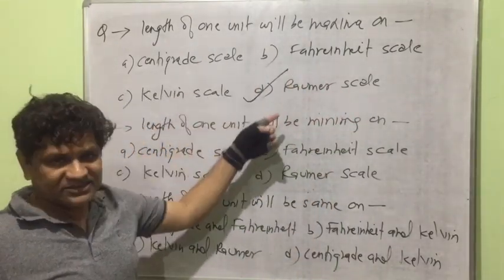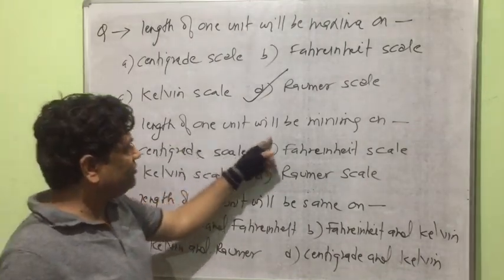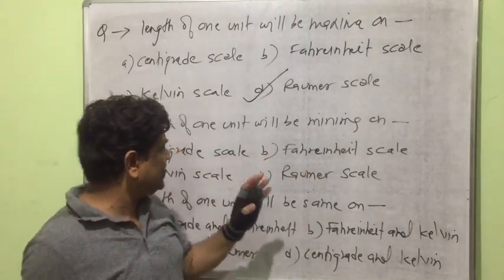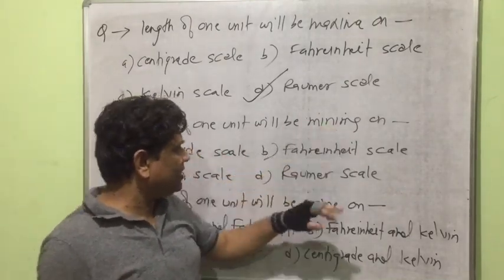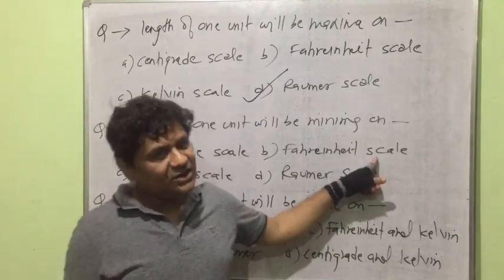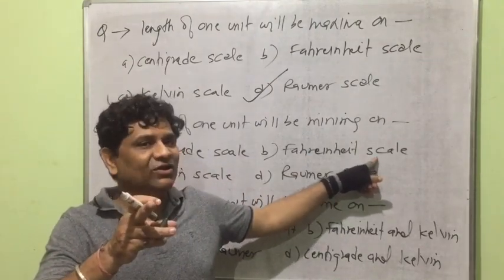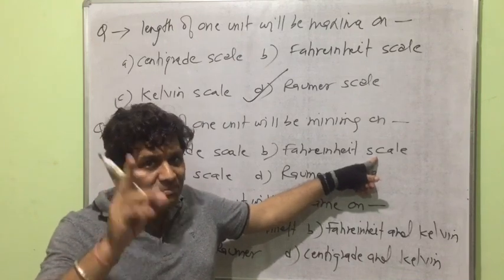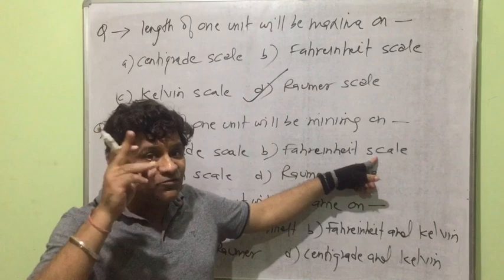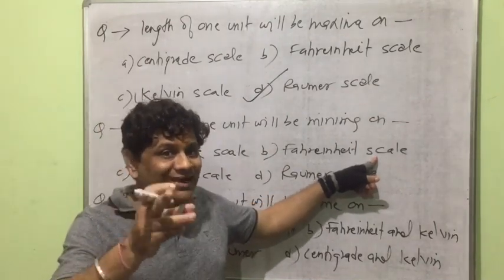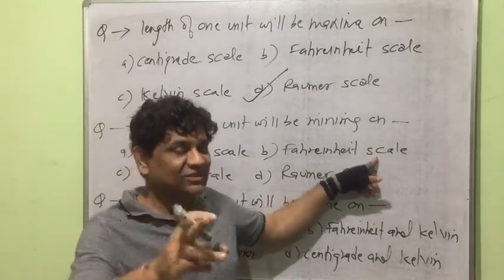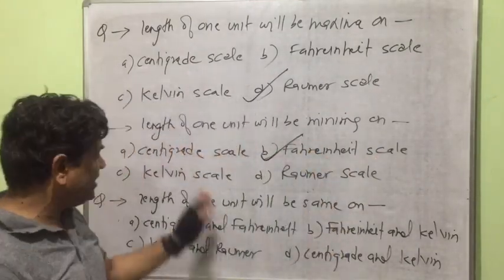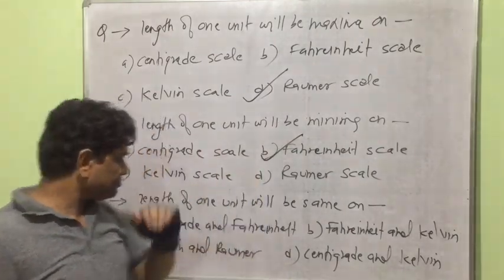Now, the length of one unit will be minimum among centigrade, Fahrenheit, Kelvin, and Réaumur scales on the Fahrenheit scale, because the Fahrenheit scale has the maximum fundamental interval. When the number of divisions is maximum in the same length, the length of one unit will be minimum. So the length of one unit is minimum on the Fahrenheit scale among these four scales.